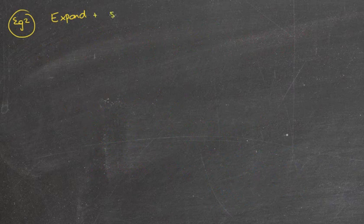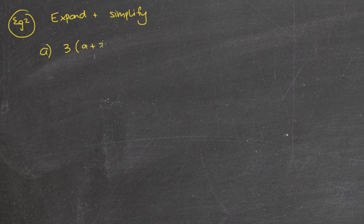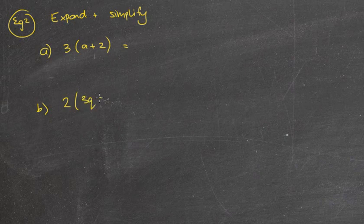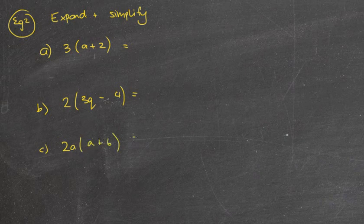So let's look at EG2. I'm going to say this time, expand and simplify. So we'll do, for the first one, we'll do 3 outside of a plus 2. And we'll do 2 outside of 3q minus 4. And we'll go a bit more challenging, 2a outside of a plus 6.